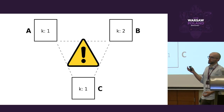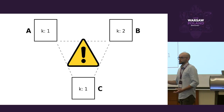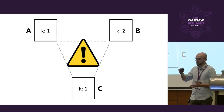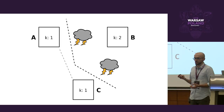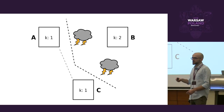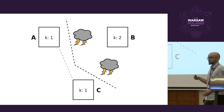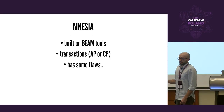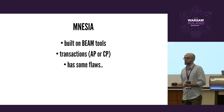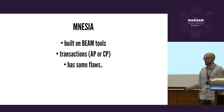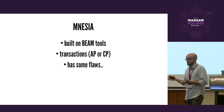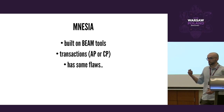To circumvent those cases you can use the majority option: when you create a Mnesia table you tell it to allow a transaction only if the node initiating it can see at least half of the nodes holding copies of the table. In the network partition example, only A and C would be able to initiate transactions; B would be completely unusable. Here we are trading data consistency for availability of the whole system.